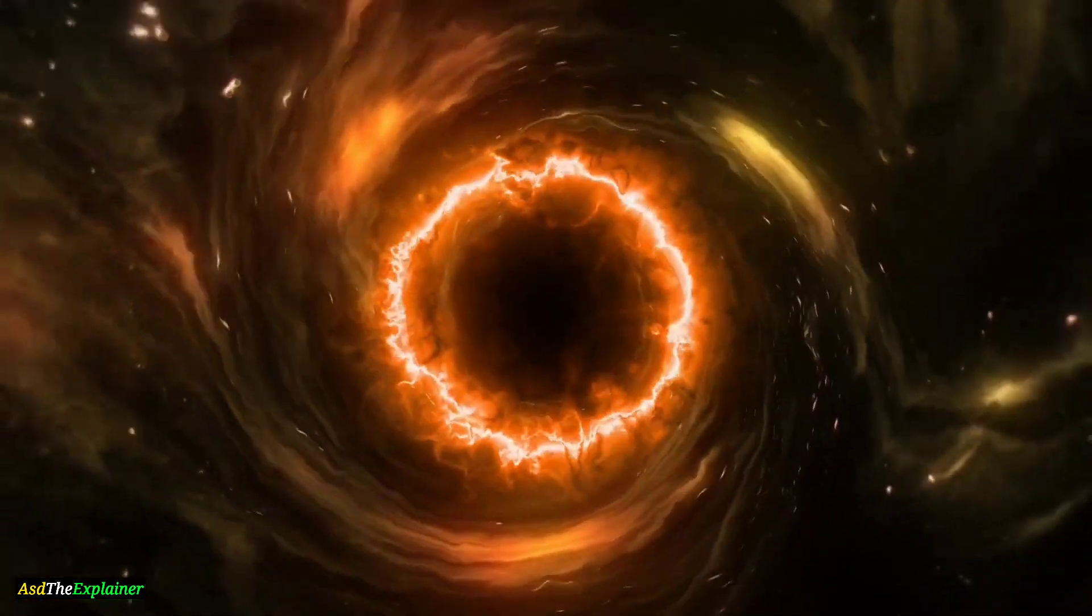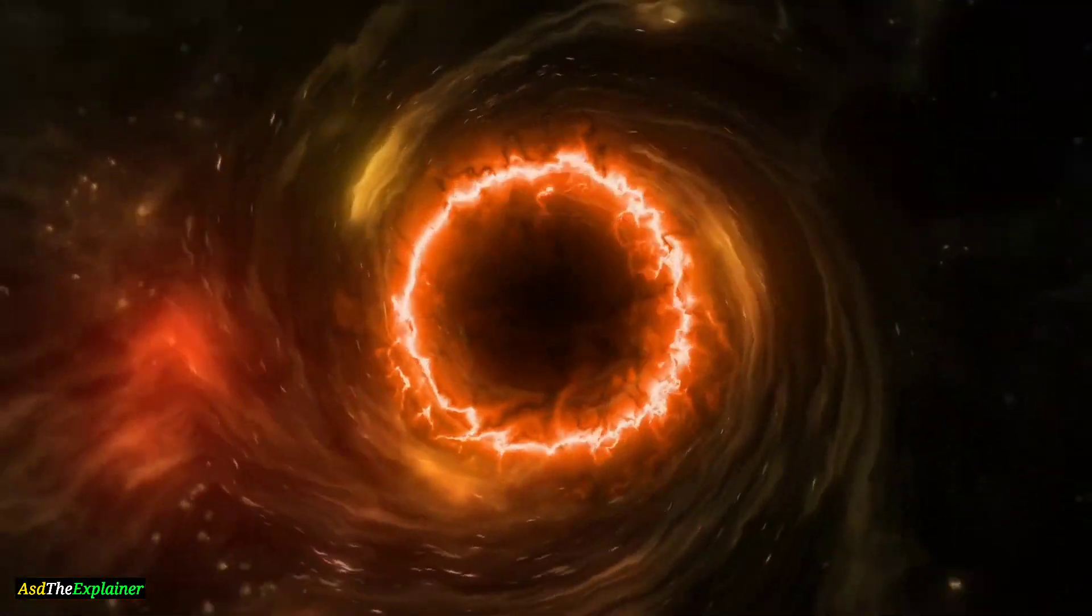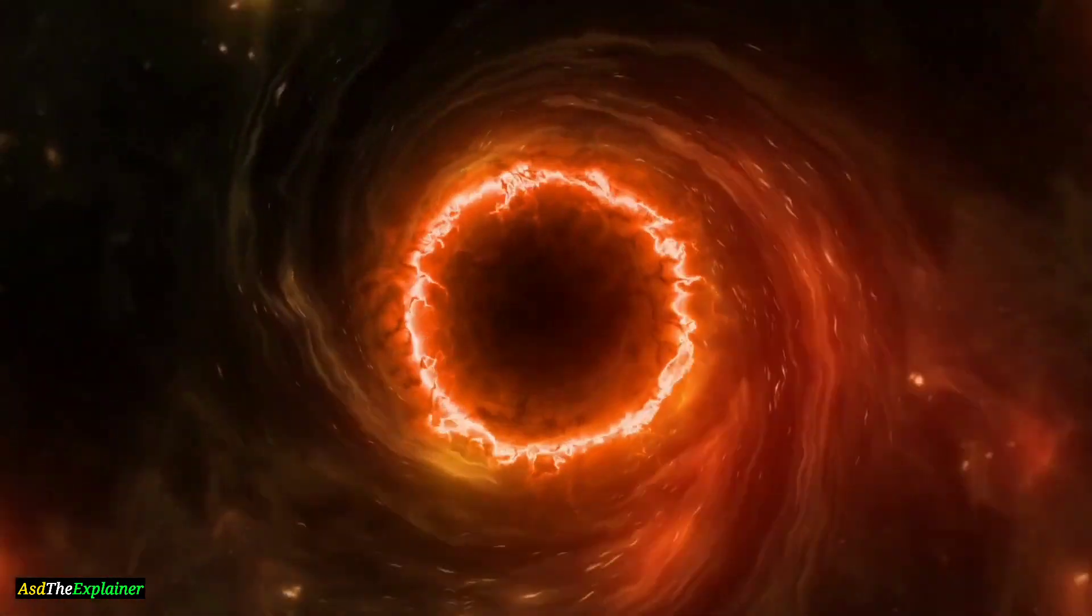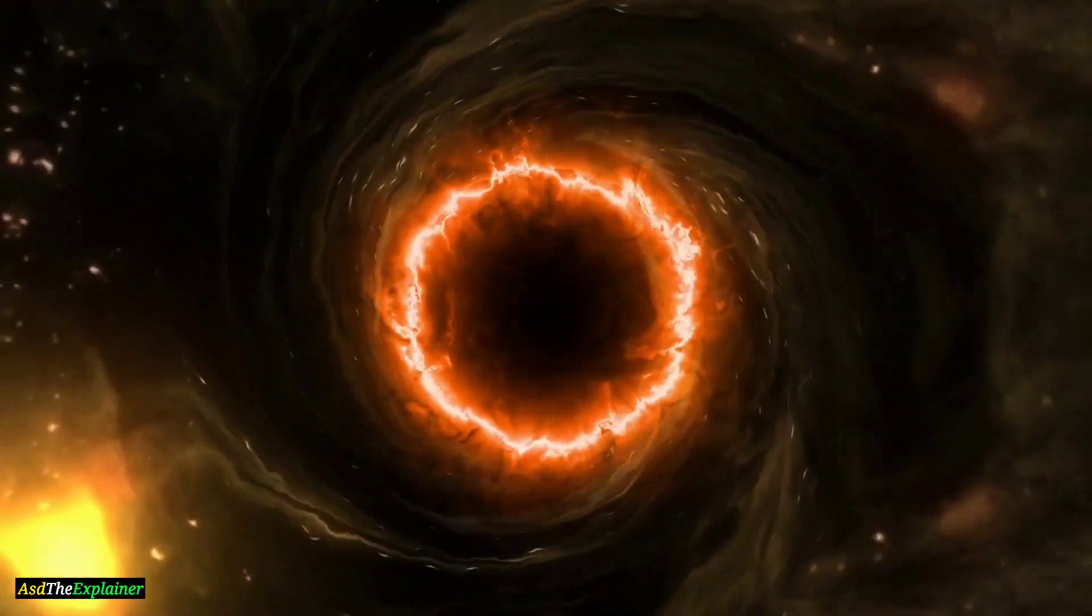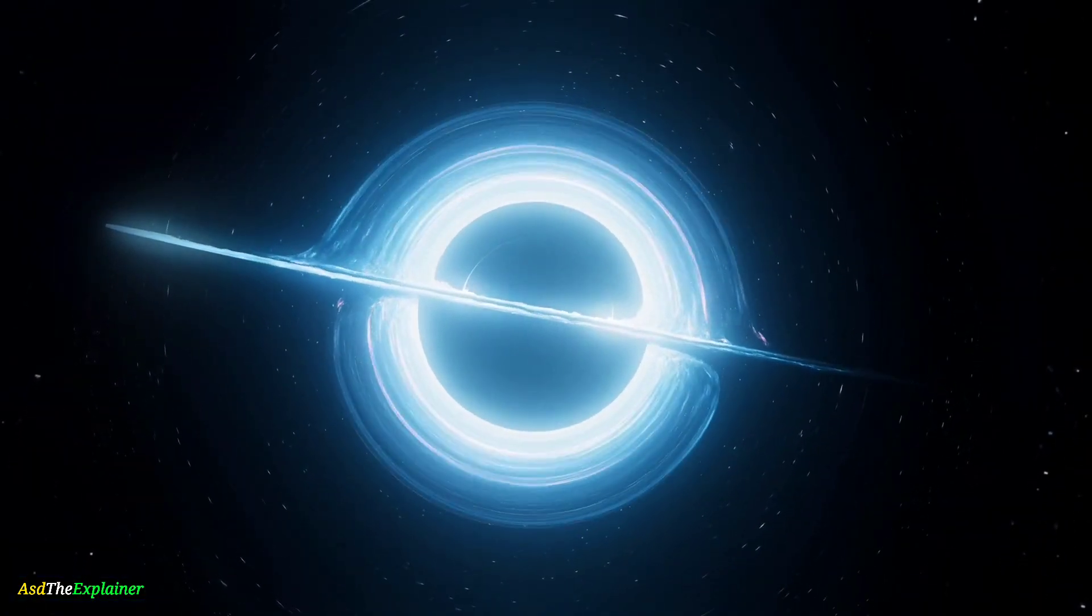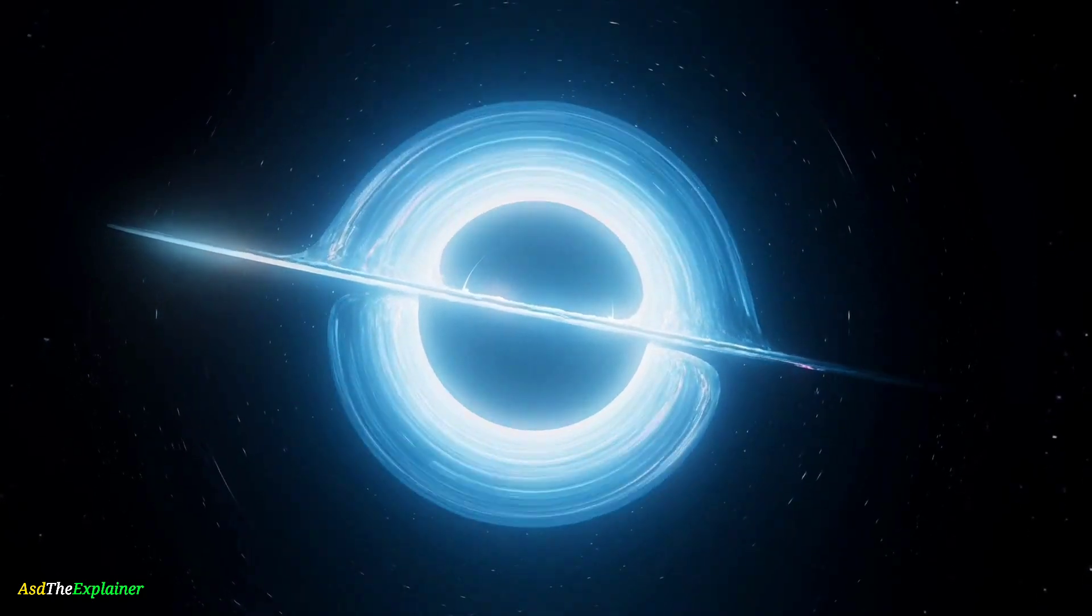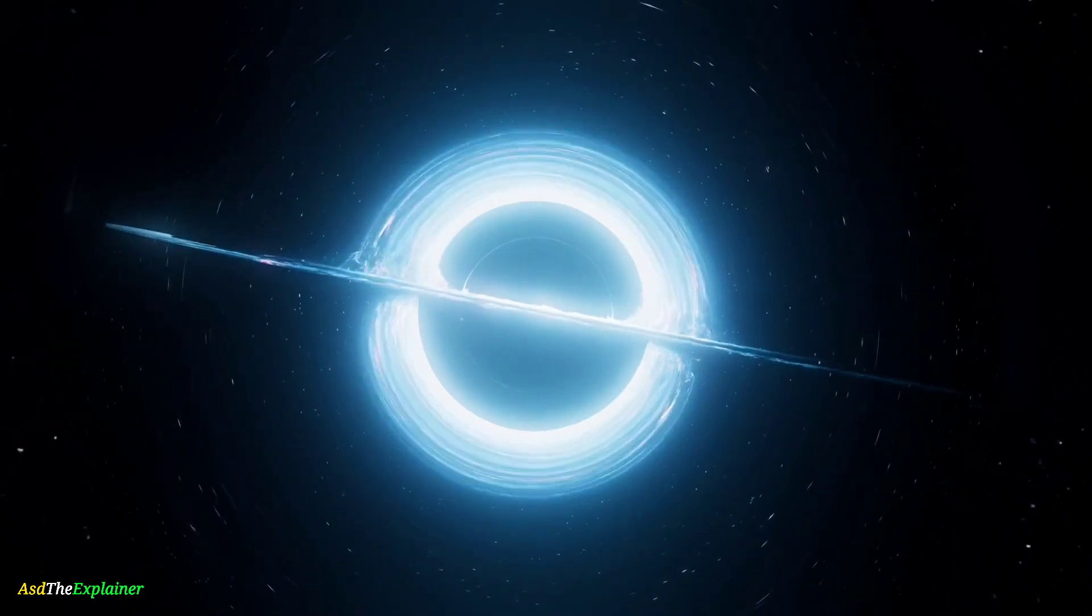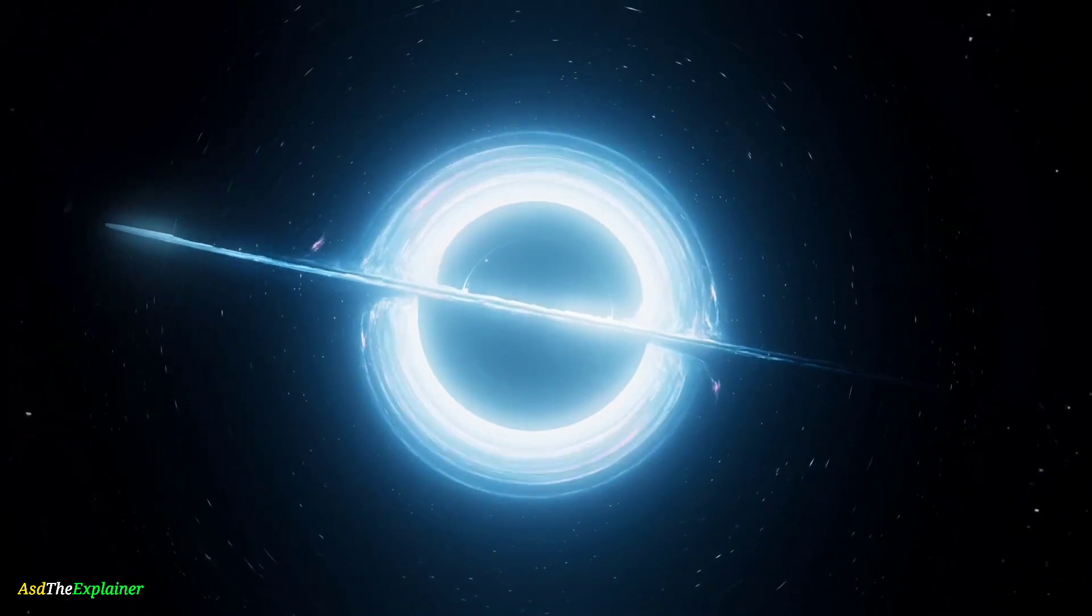However, what scientists were able to observe was the behavior of the matter around the black hole. The matter around the black hole forms an accretion disk, which is a disk of gas and dust that spirals into the black hole. As the matter falls towards the black hole, it heats up and emits radiation, which can be observed by telescopes.